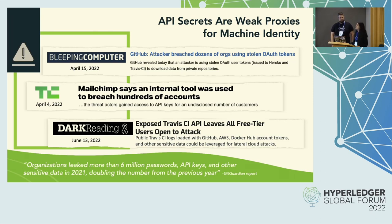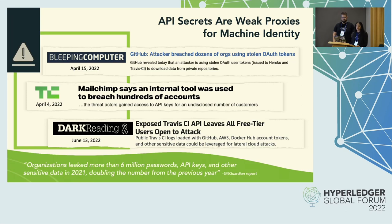Adversaries are really wising up to this and almost shifting their focus in attacks from human usernames and passwords to API secrets, because oftentimes they also provide larger pipes and access to information. Increasingly we're seeing organizations trying to put API security strategies in place. And at Korsha, we're focusing on authentication, machine identity, and so forth.